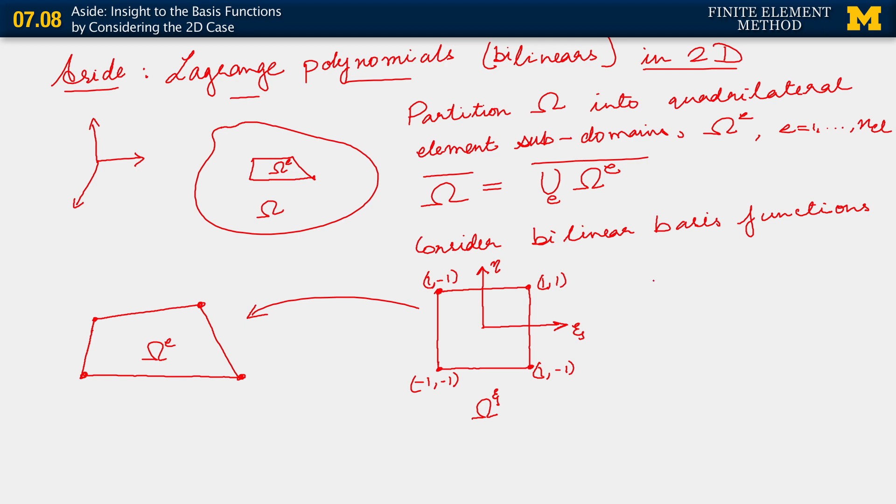All right, again we number these nodes as A equals 1, 2, 3, 4. And again using notation that we've employed before, we may say that the coordinates of local node A, those coordinates in general can be denoted as xi A eta A, and they take on the values that we've put down here: minus 1, minus 1, 1, minus 1, and so on.